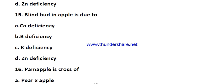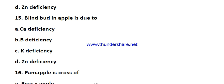Question number fifteen: blind bud in apple is due to — options are calcium deficiency, boron deficiency, potassium deficiency, and zinc deficiency. The right answer is zinc deficiency. Blind bud is when buds at the basal end of the shoot remain dormant and cannot grow — that is called blind bud in apple, and it is due to zinc deficiency.